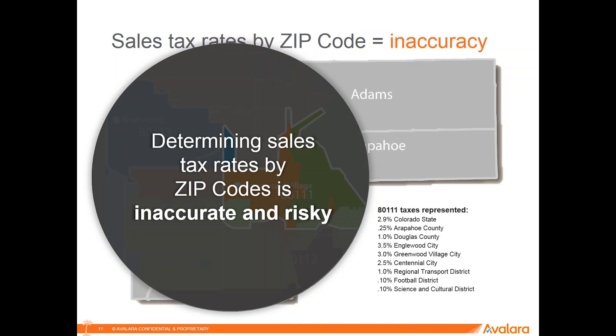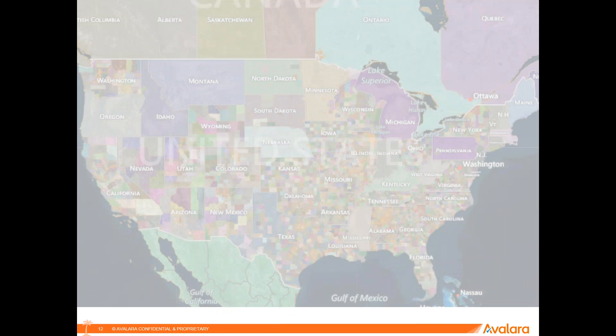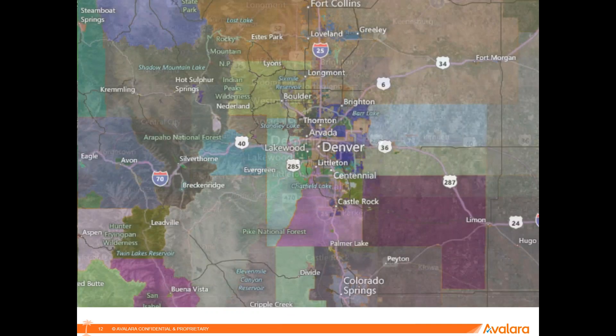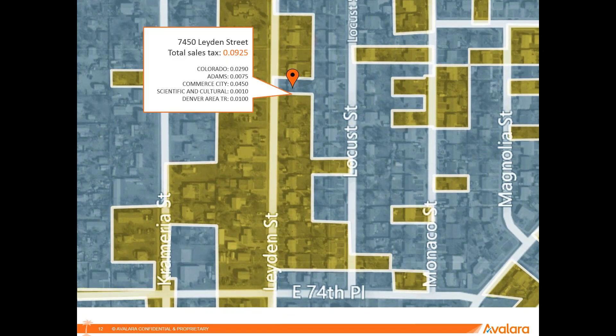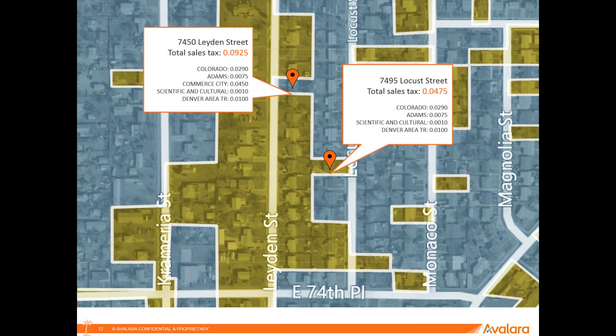To give you a better example, we're going to drill even closer into a specific address in Denver — 7450 Layden Street — and it's got a sales tax rate of 9.25%. You can see what makes that up. Then there's another address in a different color area nearby, and the difference is now 4.75% in tax. What's missing in the second address is the commerce city tax. These two addresses are actually very close to each other in proximity but have very different tax rates. This is why using a zip code is going to be very inaccurate and risky. What we do is get down to the rooftop level to deliver you an accurate tax rate.